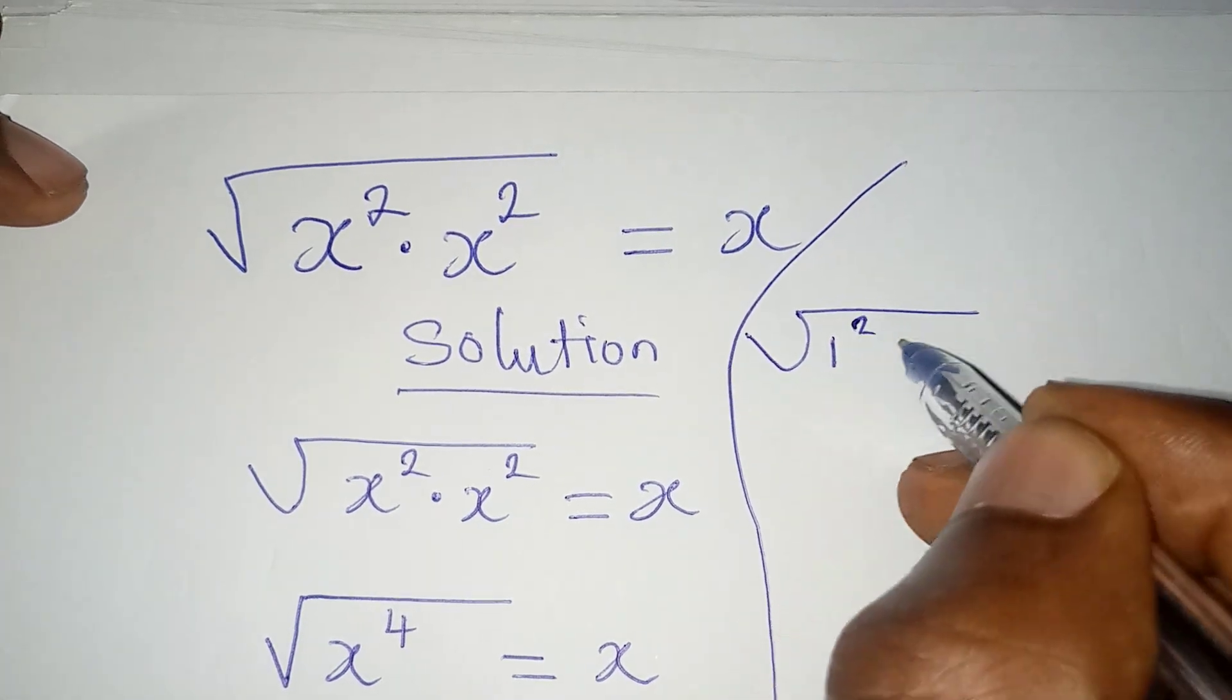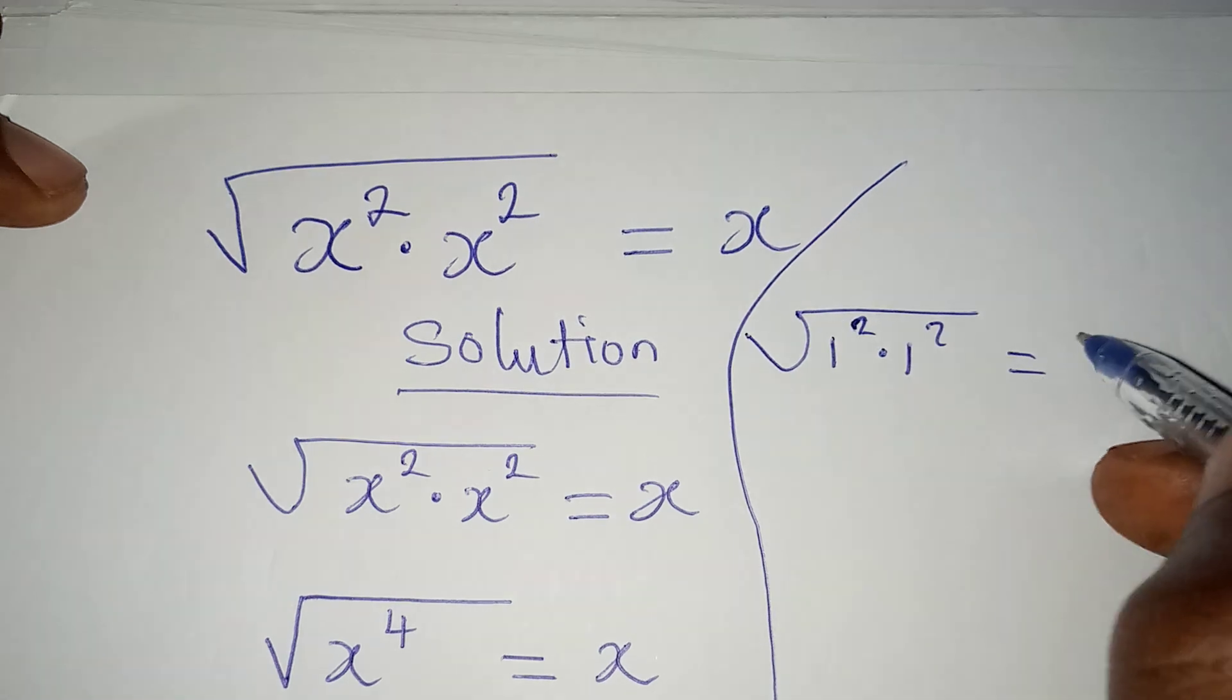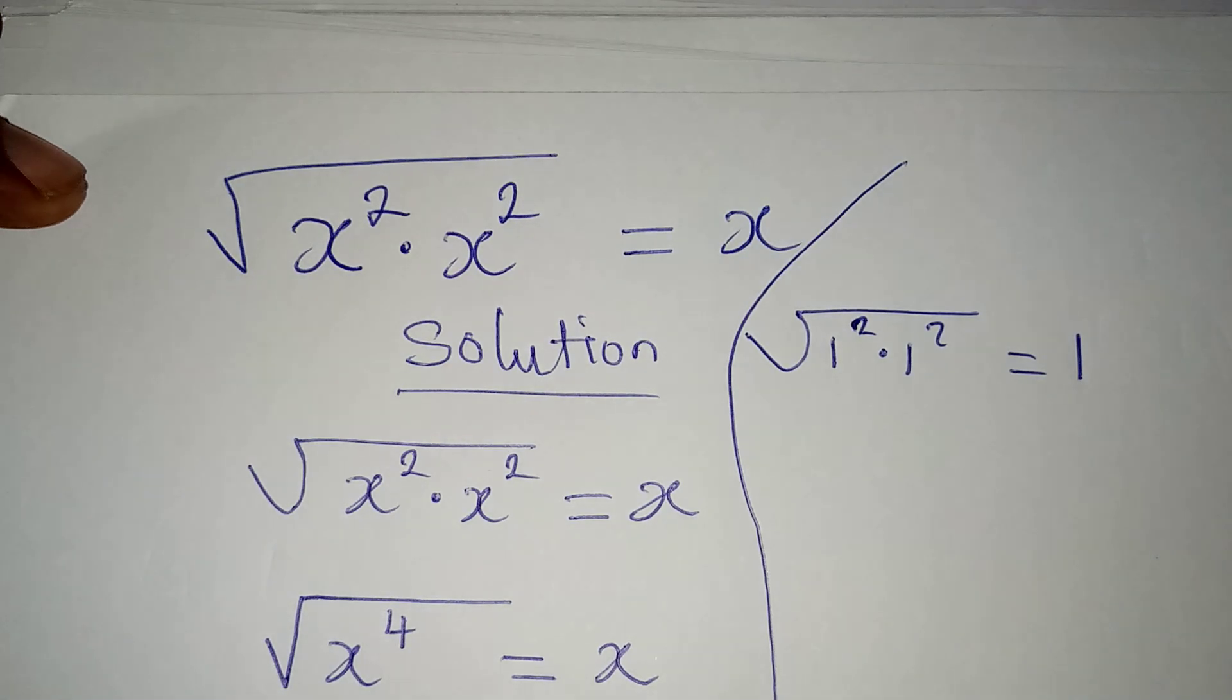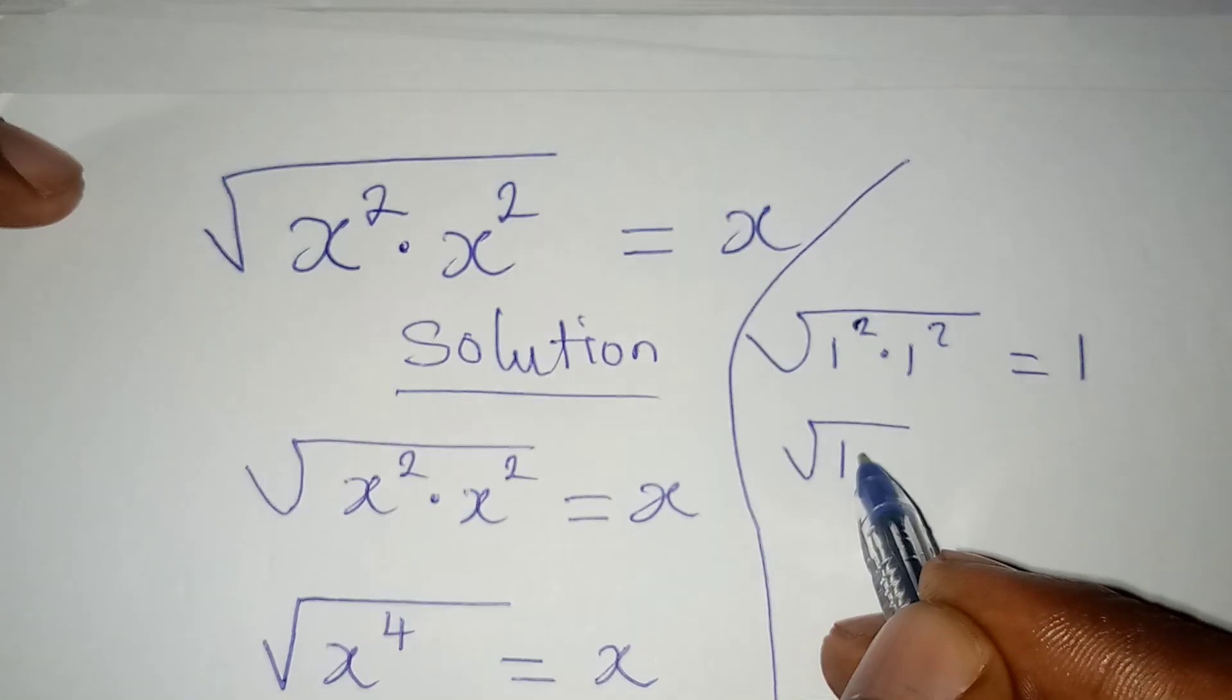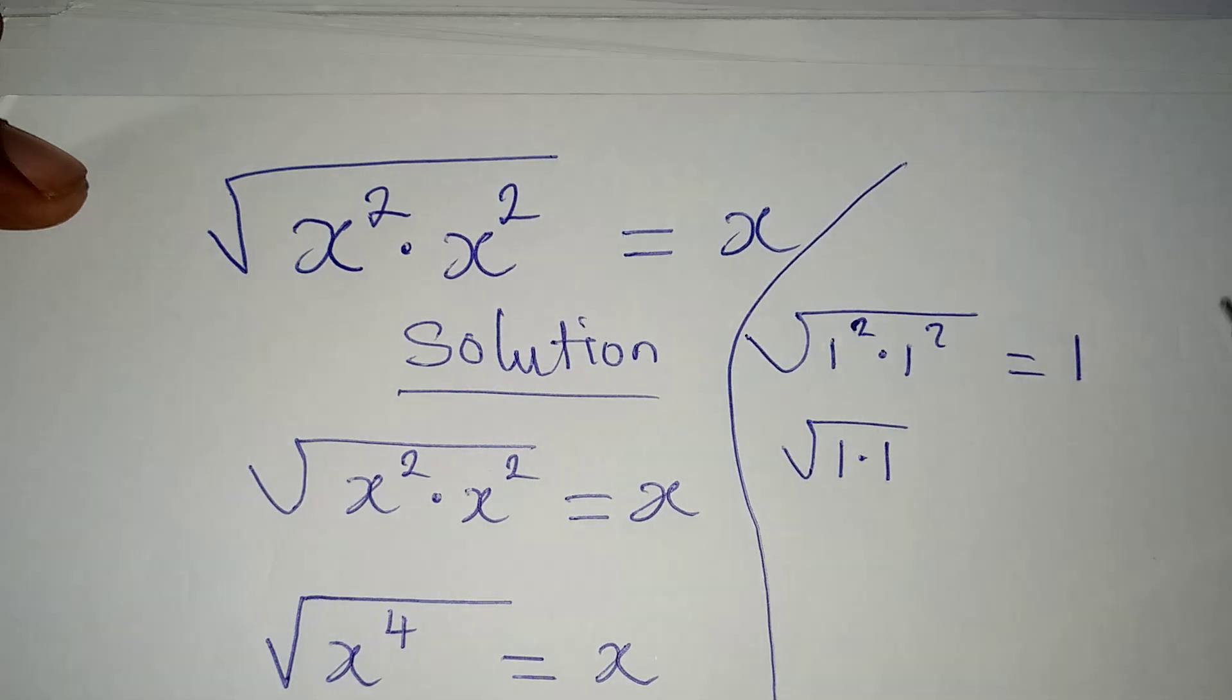We are going to have 1 squared multiplied by 1 squared, which is equal to 1, because the value of x is 1. And 1 squared will give us 1 times 1. 1 squared is 1, then 1 squared is also 1.